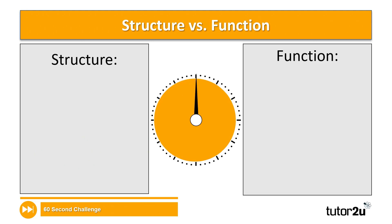Okay, so hopefully you got on with that task okay. I'm going to set you another one-minute challenge now — it's a quick definition challenge. I would like you to provide me with a definition of what the word 'structure' means in relation to neurons, and also what the word 'function' means in relation to neurons. This is going to go into question two in your booklet, so you have one minute to complete that task beginning now.